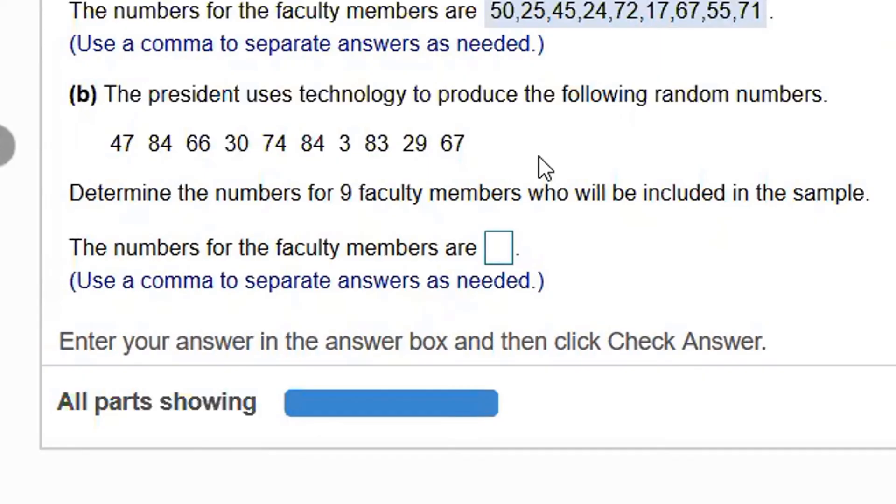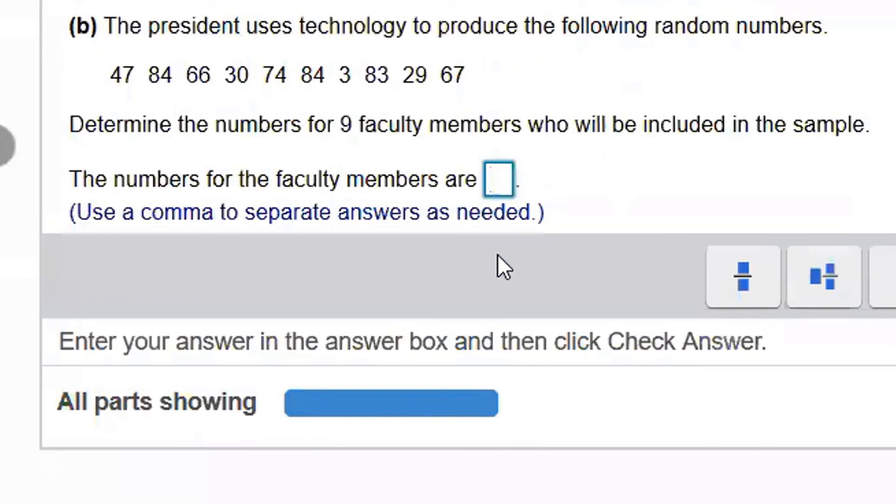So like I just mentioned in the last part of the problem, I'm going to skip the second 84 when I type those in. So I have 47, 84, 66, 30, 74, skip the repeat, 3, 83, 29, 67.